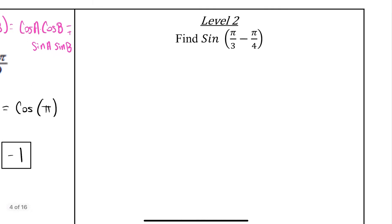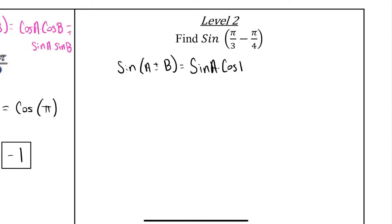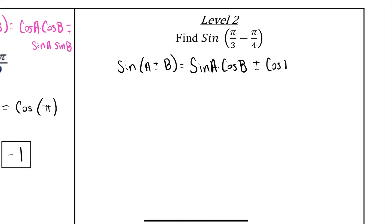For question number two, it says find the sine of π/3 minus π/4. So this time I'm looking at my sine sum and difference formula. The sine sum and difference formula is: sine of A plus or minus B equals sine A times cosine B. We keep the same sign — if it's plus we keep the plus, if it's minus we keep the minus. Then we flip-flop it and do cosine A times sine B. We know that A represents π/3 and B represents π/4.